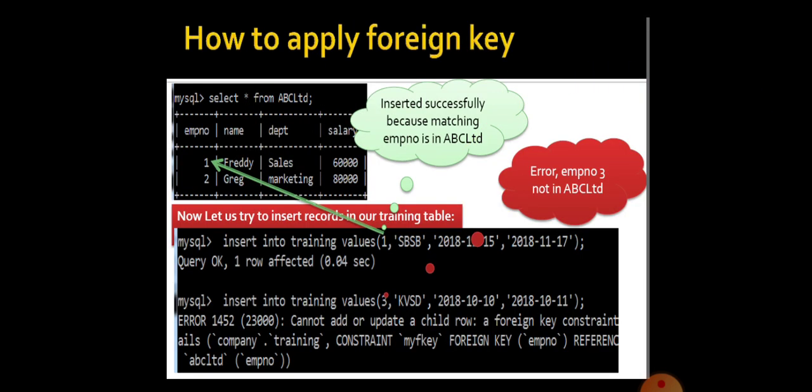How to apply foreign key? Look at this syntax given here. We are trying to update a value with the training table. That is 1 is for employee number, SBSB is for training name and start date and end date. So one row will be affected. The insertion happens successfully.